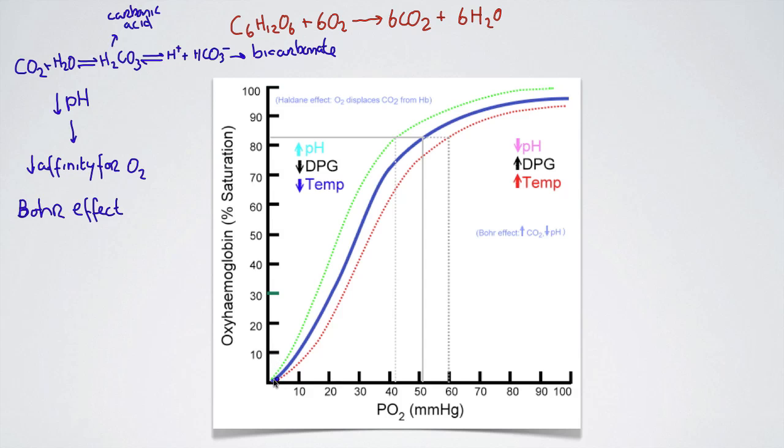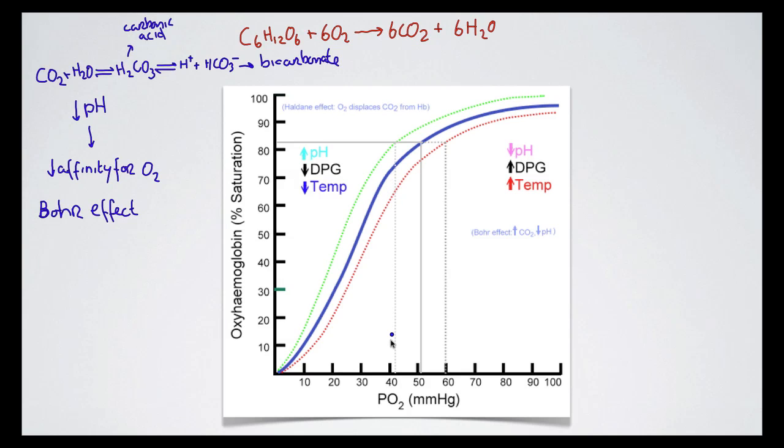How that appears in the oxygen dissociation curve is that the curve actually shifts to the right. So you can see this dotted red line here and what that shows is we have a lower affinity for oxygen. So for example, if the partial pressure of oxygen is around 42 millimeters of mercury, normally the hemoglobin would be approximately 73-ish, 74-ish percent saturated with oxygen.